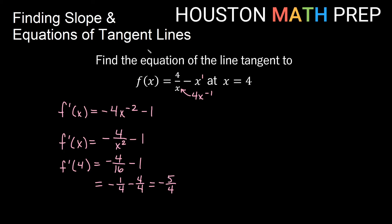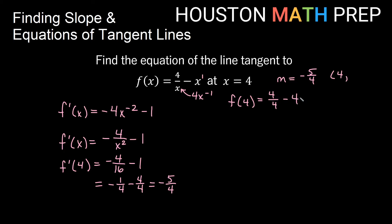We have the slope, but we also need a point the tangent line goes through. So m = -5/4. To find the y value at x = 4, we plug into the original function: f(4) = 4/4 - 4 = 1 - 4 = -3. So we'll use the point (4, -3) to find the equation of the line.